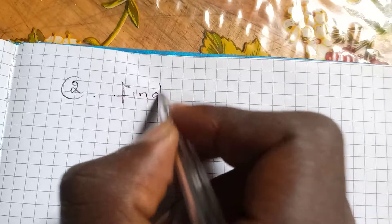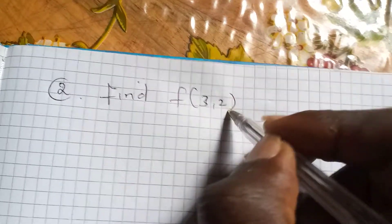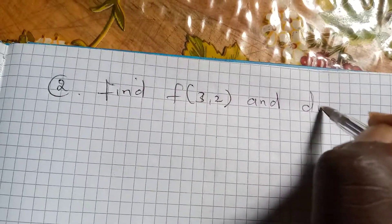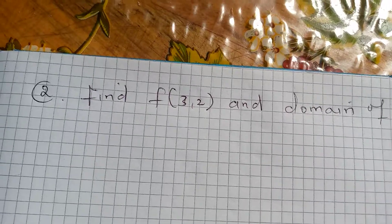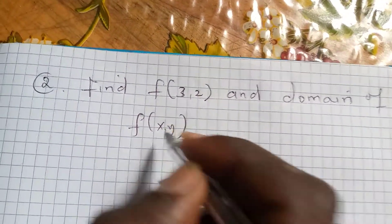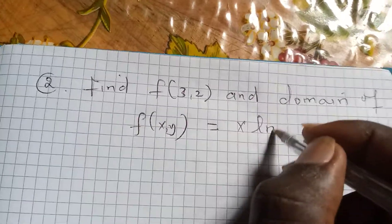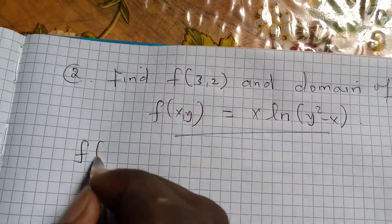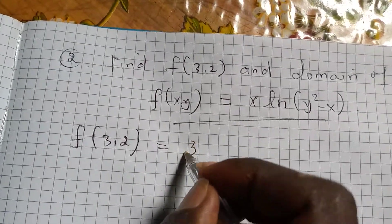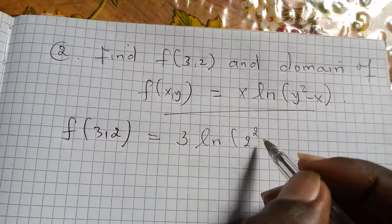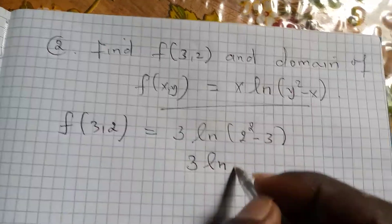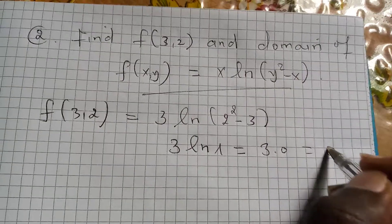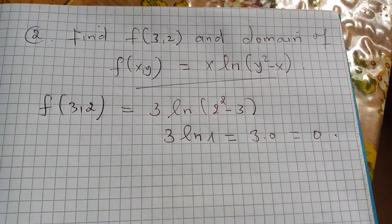Now for Example 2: find f(3, 2) given f(x, y) = x · ln(y²) - x. Substituting, f(3, 2) = 3 · ln(2²) - 3 = 3 · ln(4) - 3. Since ln(4) is approximately... wait, this simplifies as 3 times zero equals zero, so f(3, 2) = 0.